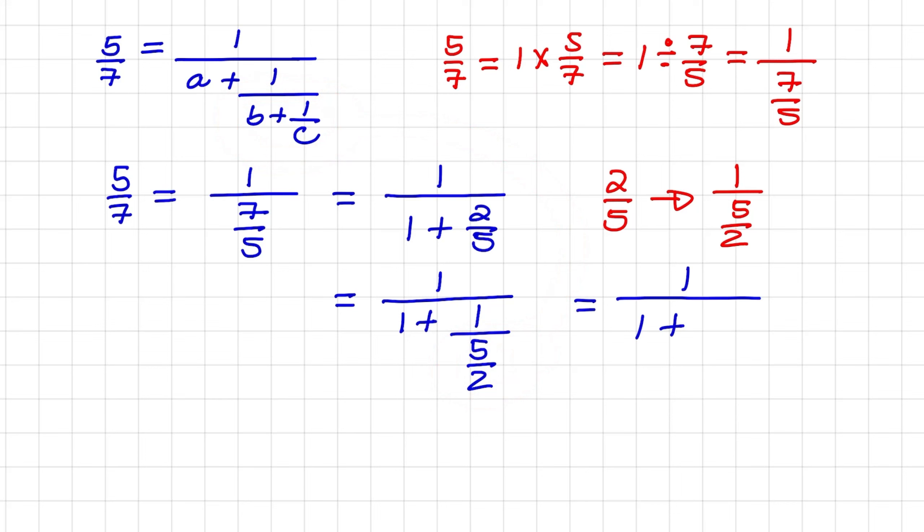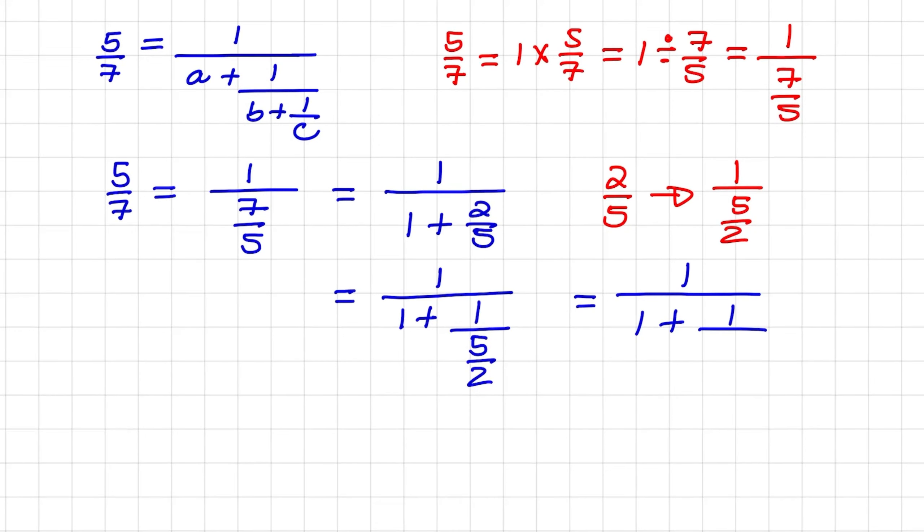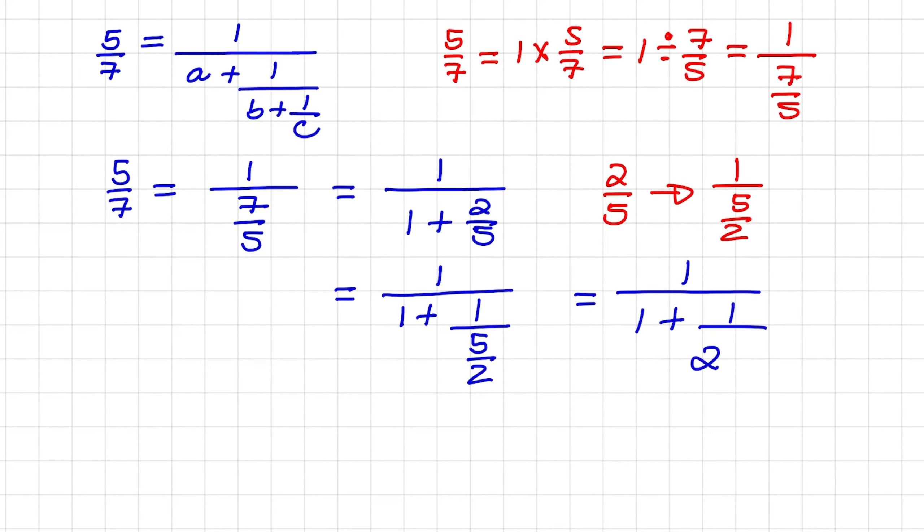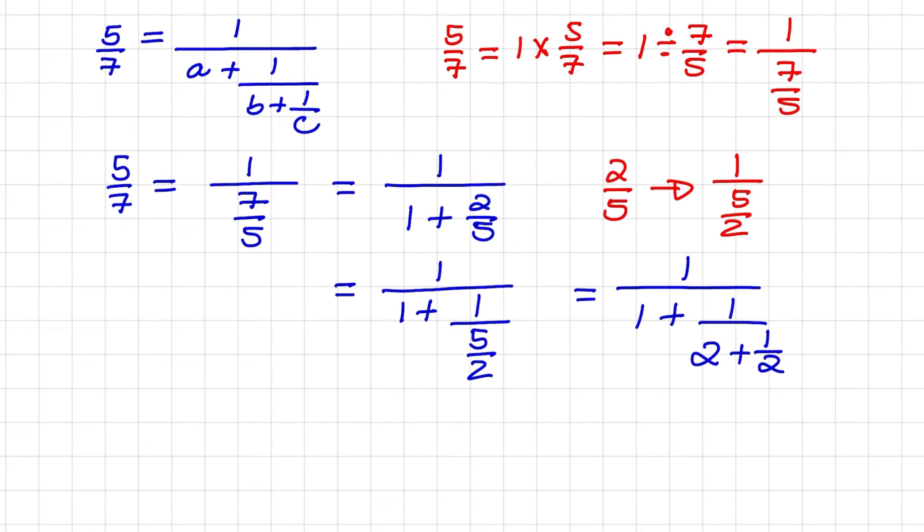And when I rewrite the fraction, I know that 2 goes into 5 twice, and then there is a remainder of 1 over 2. So now we can see that 5 over 7 is rewritten in this compound fraction format.